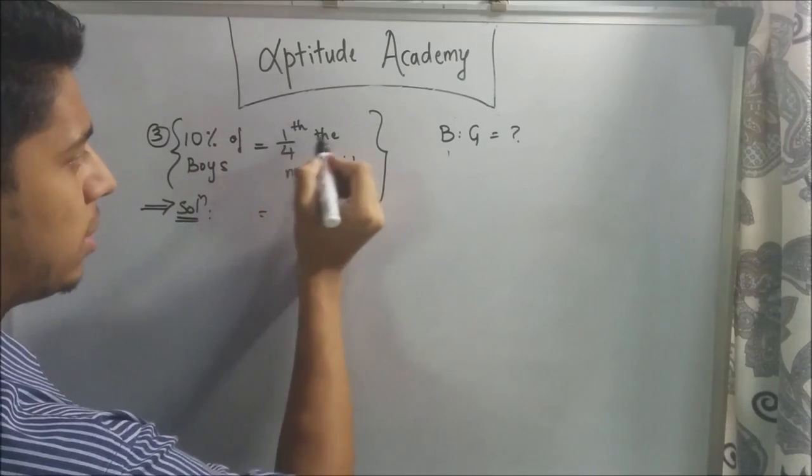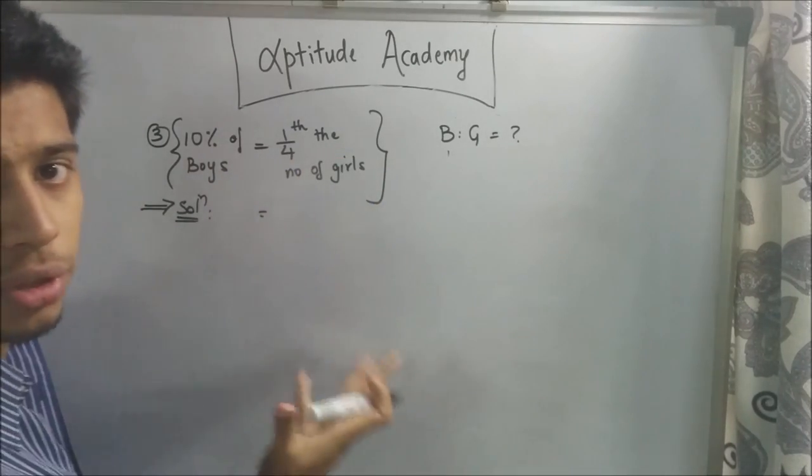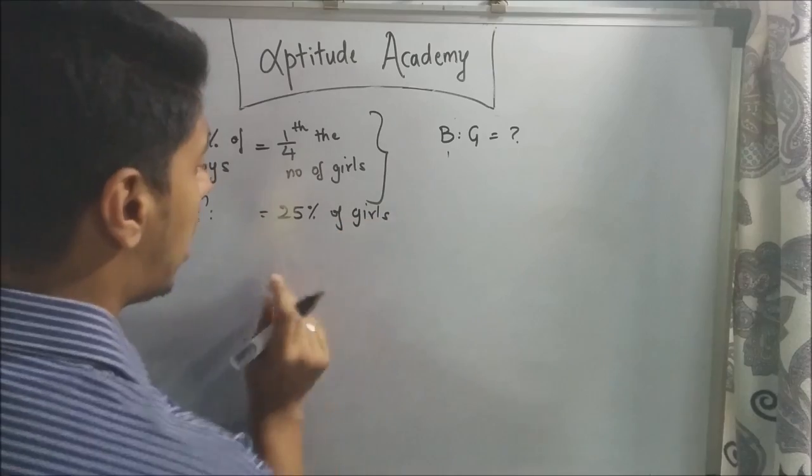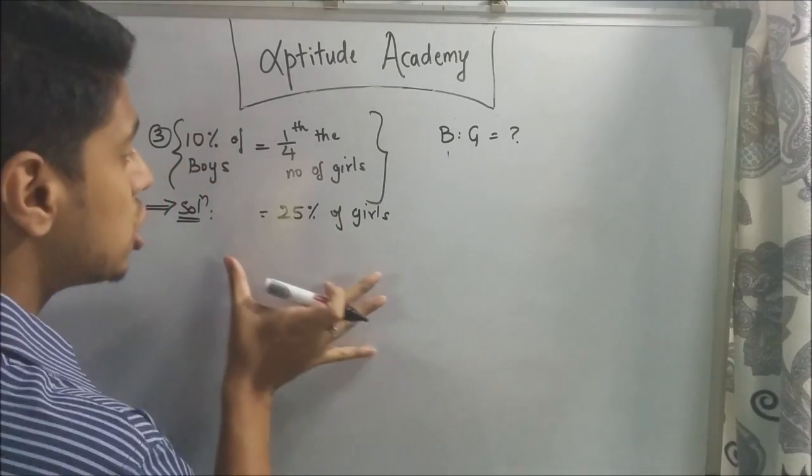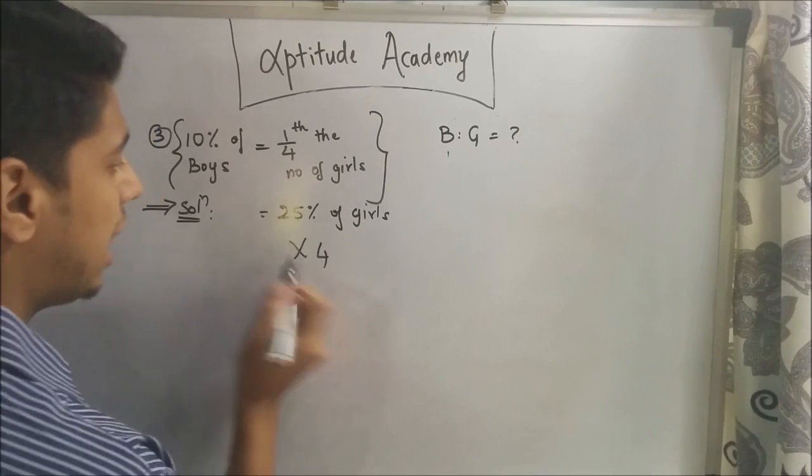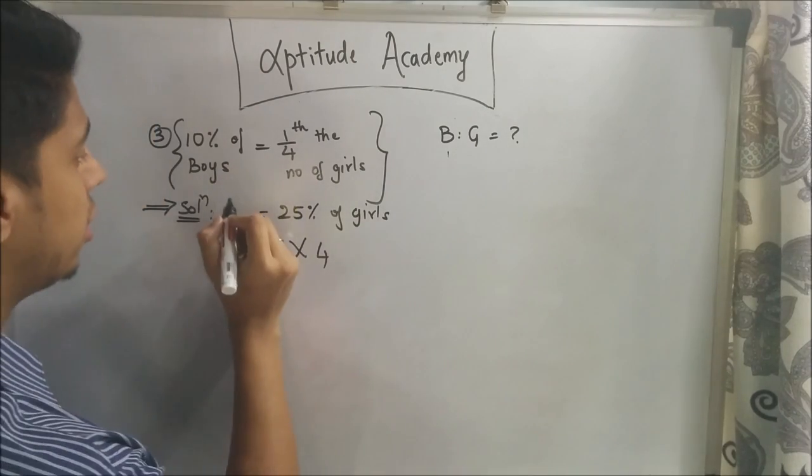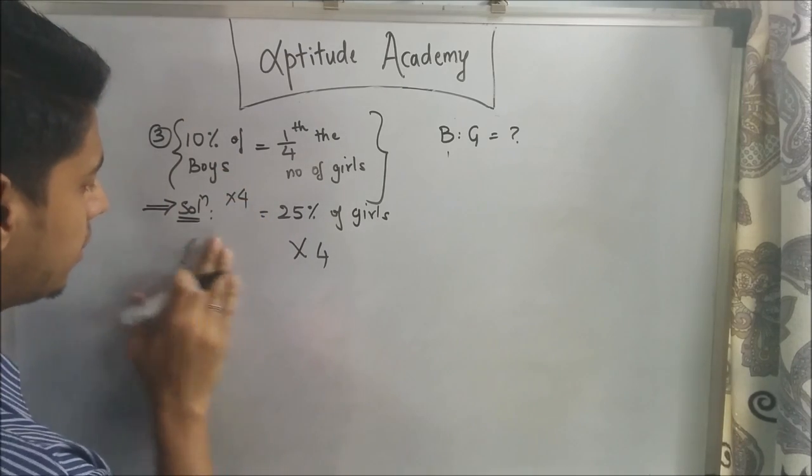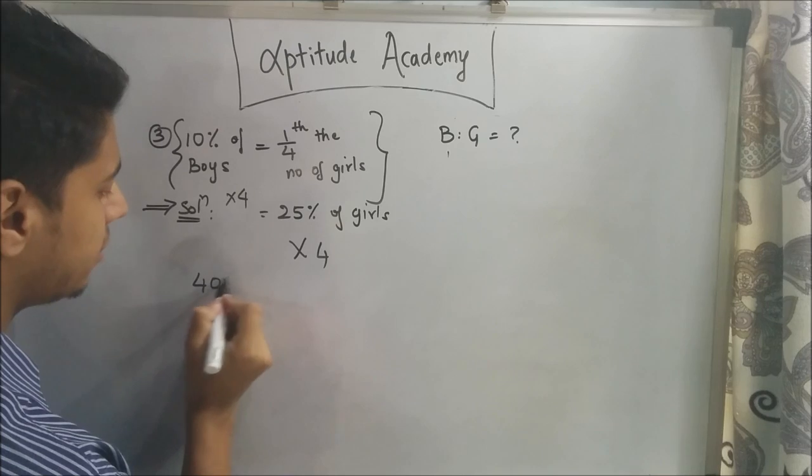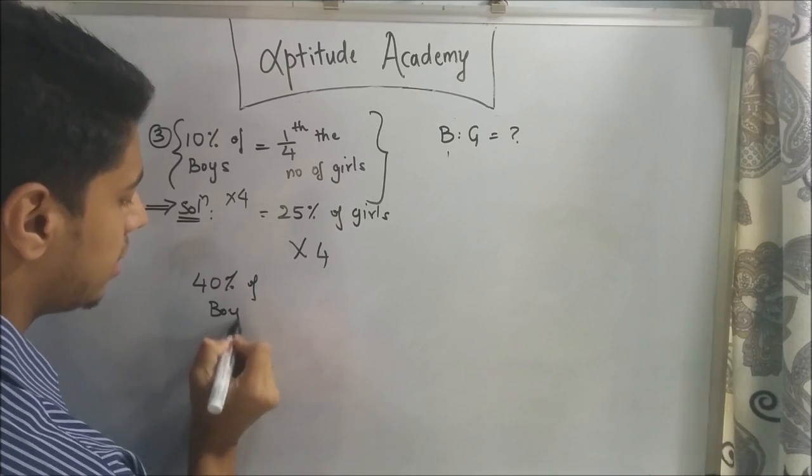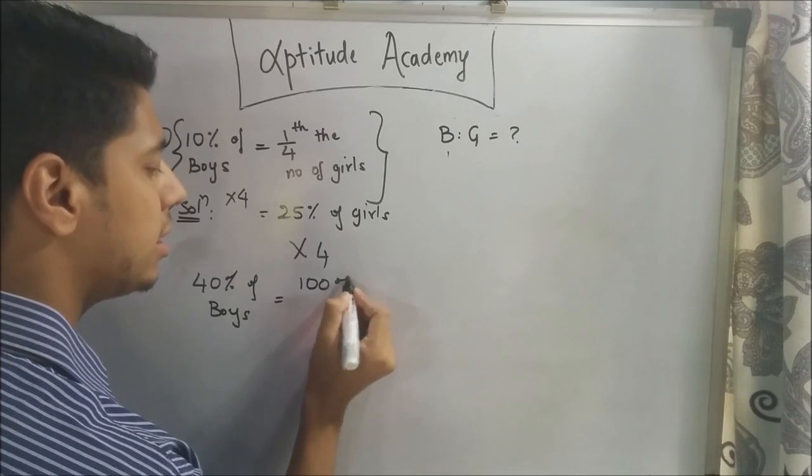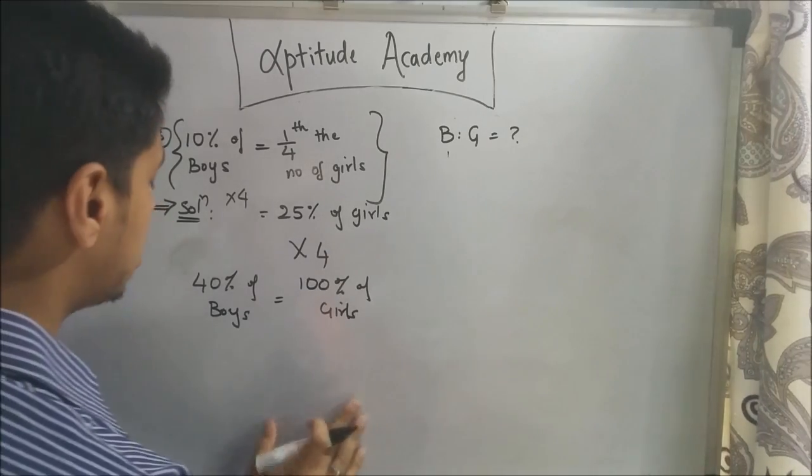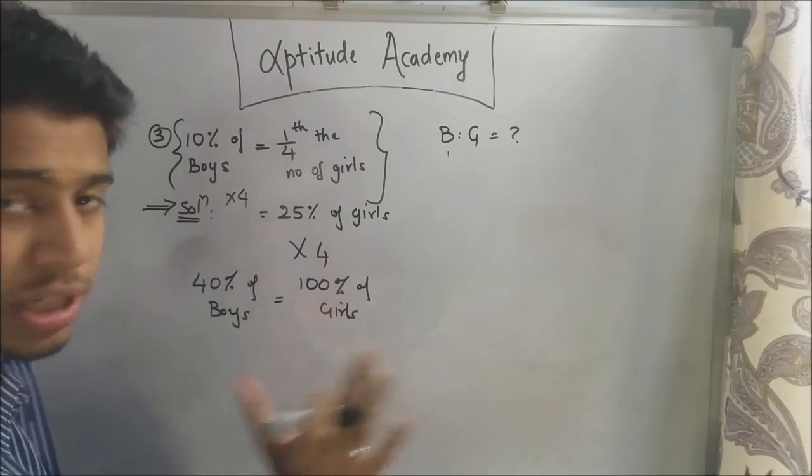10% of boys equals one-fourth of girls. One-fourth is 25%. To get 100% of girls, multiply the ratio by 4. Multiply both sides by 4: 10 × 4 = 40. So 40% of boys equals 100% of girls.